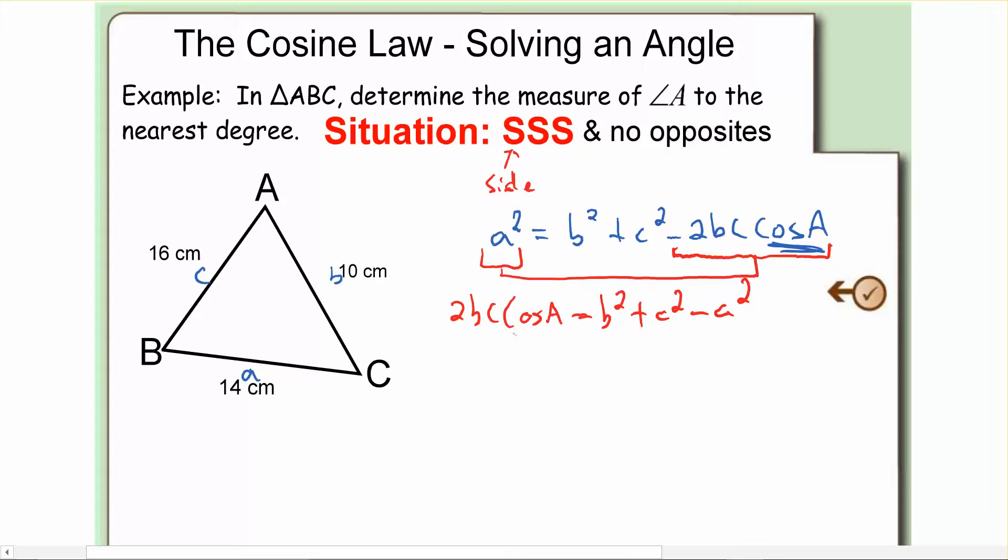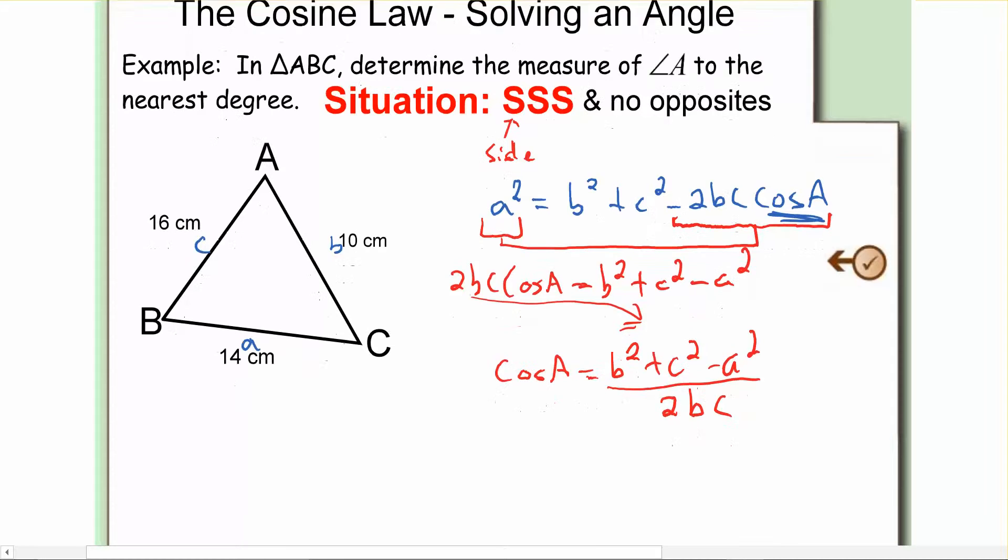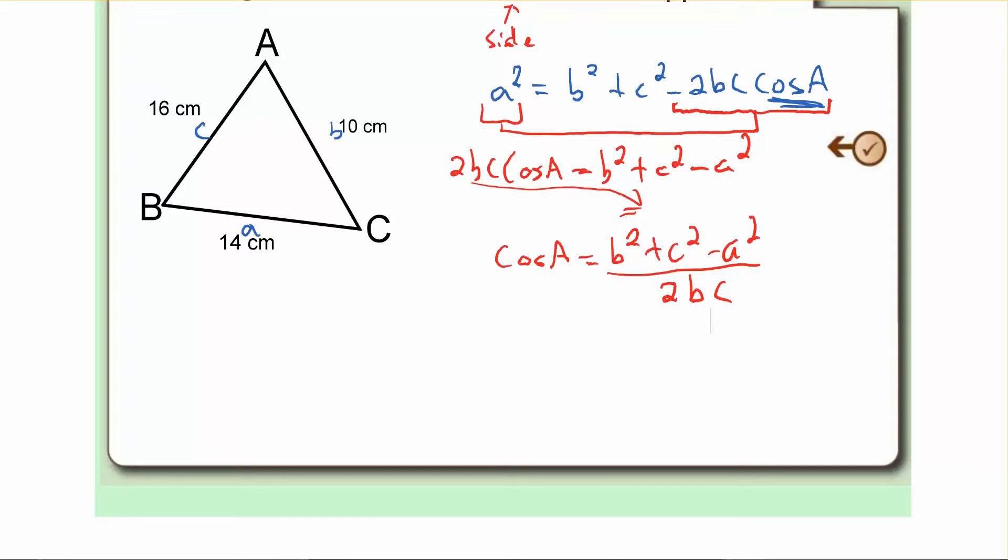Now I just need to get cos A on its own. So all I'm going to do is divide both sides by 2BC, which really just means I'm going to bring those down to the bottom of that side of the equation. And what I have left when I do that is just cos A is equal to B squared plus C squared minus A squared all over 2BC. And now it's not any tougher. Now we just got to plug stuff in.